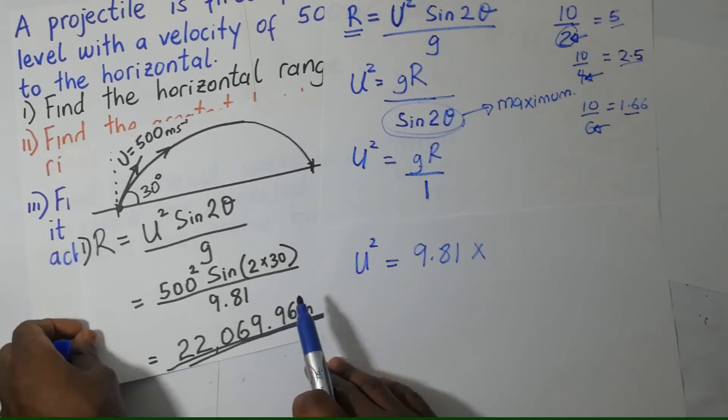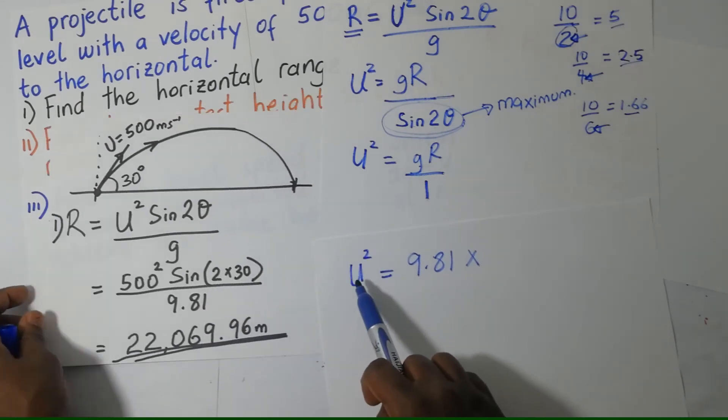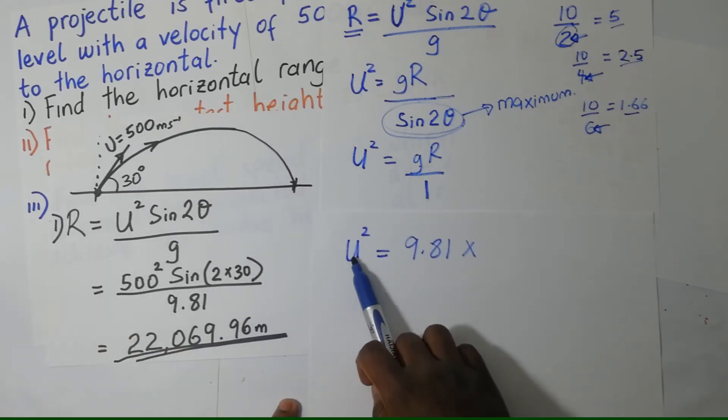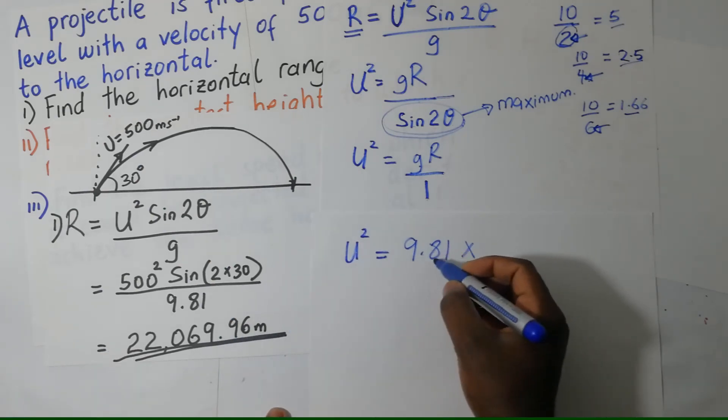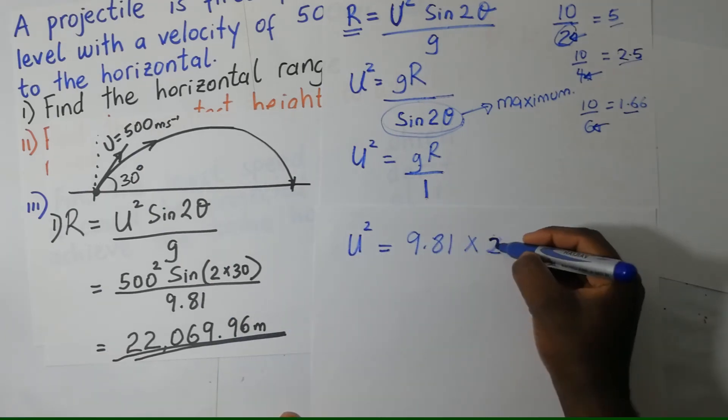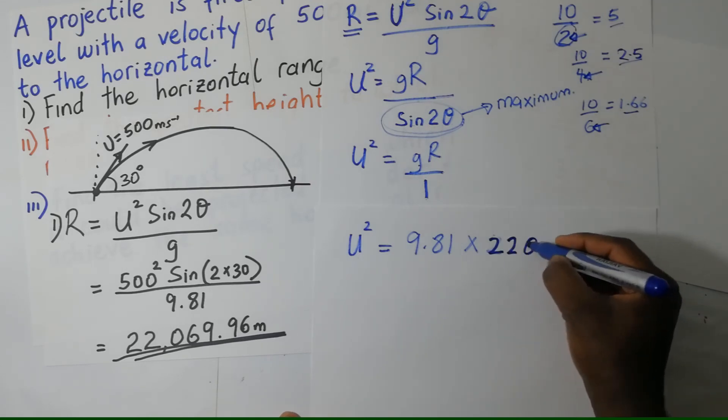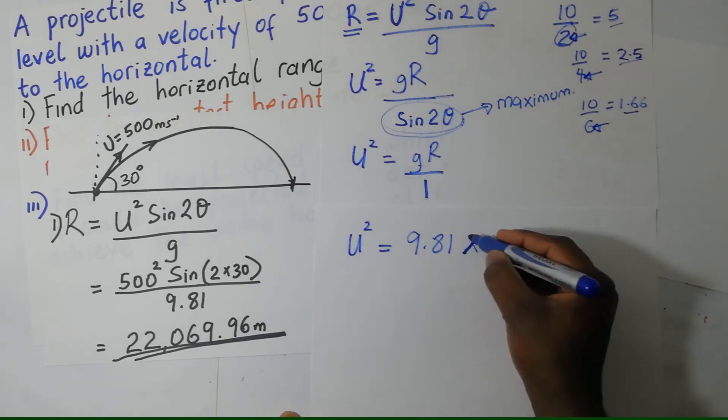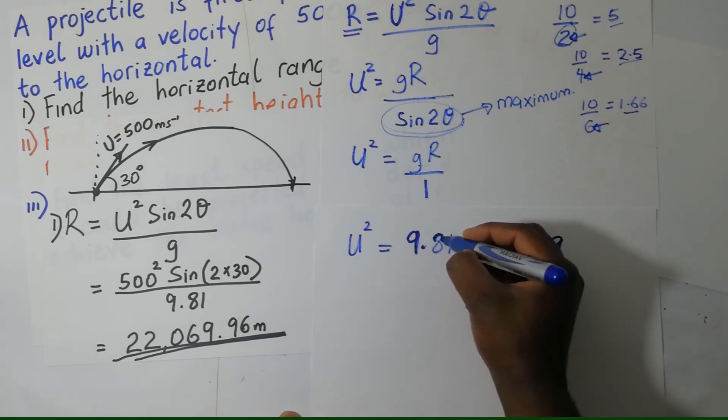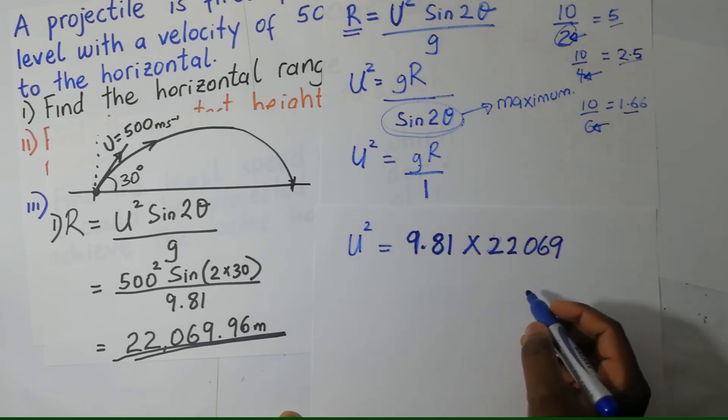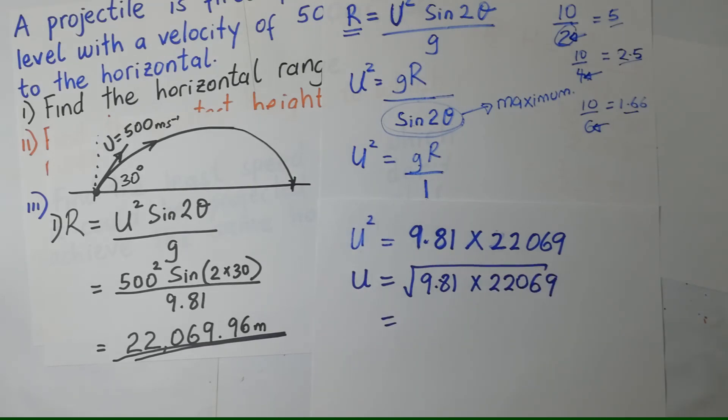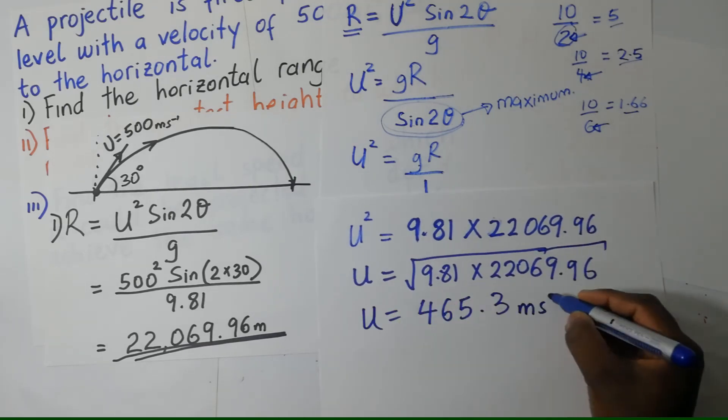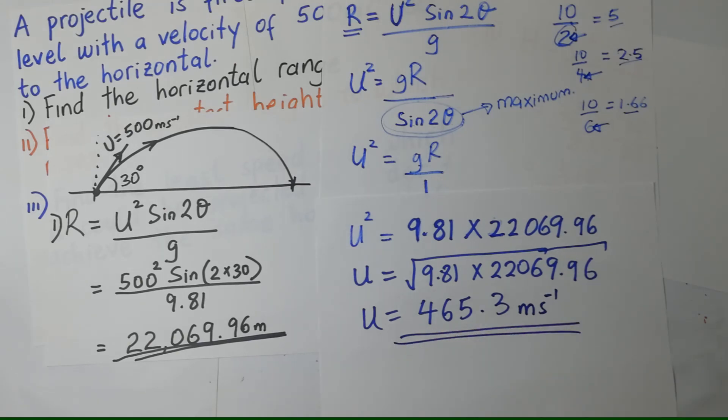The range we got was 22069. Remember, the question is telling us to find the minimum, the least possible value of U to attain the same range. So, this is 9.81 multiplied by that value.